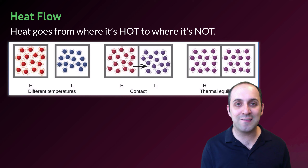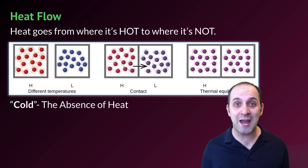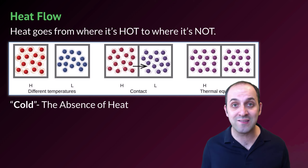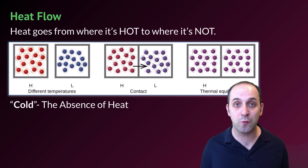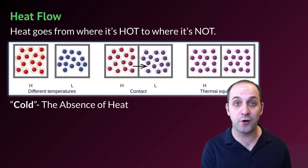As humans, it's easy to think about cold as something separate from heat. But as chemists, it's important to understand that cold is really just the absence of heat. The reason we sense things as hotter or colder has to do with our nervous system and how it interprets the average kinetic energy of the things it comes into contact with. The things we feel as colder simply exist at lower average kinetic energies than the things we feel as hotter.